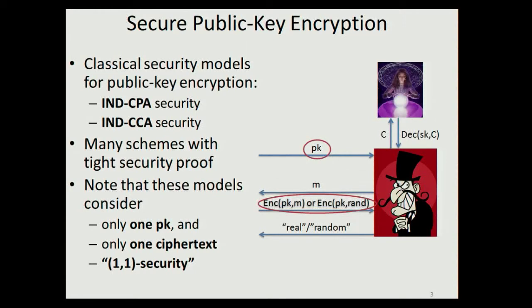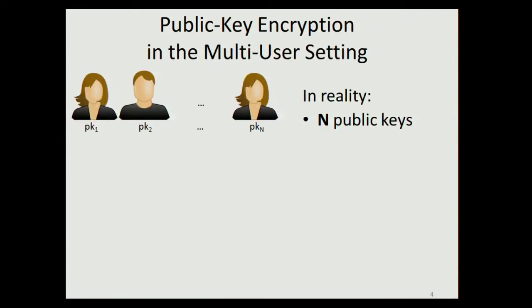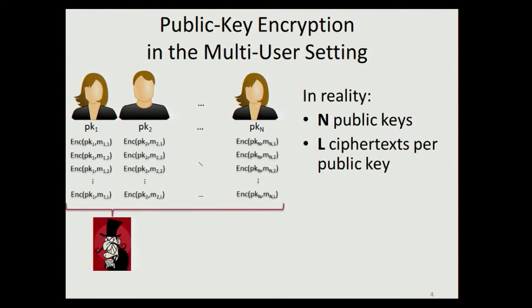We know many schemes which have a tight security proof in these security models, but the security model is a bit idealized — we have only one public key and only one challenge ciphertext. I refer to these security notions as (1,1)-security. In the real world the situation is different: we have more than one receiver, so we have many public keys, and any receiver may receive more than one ciphertext. So we have n public keys and l ciphertexts, where n and l may be very large depending on the application.